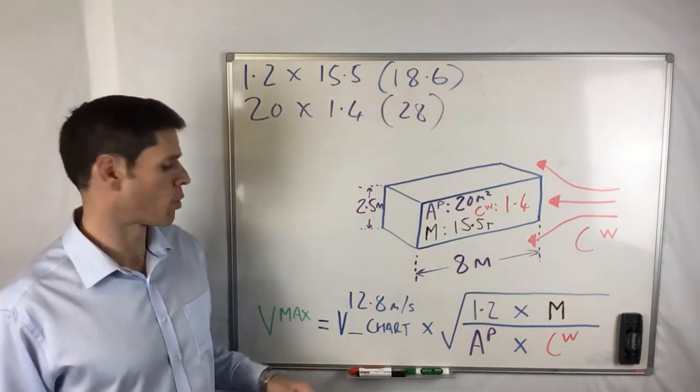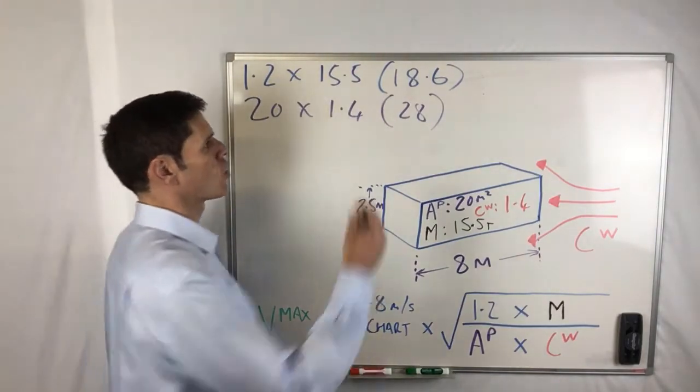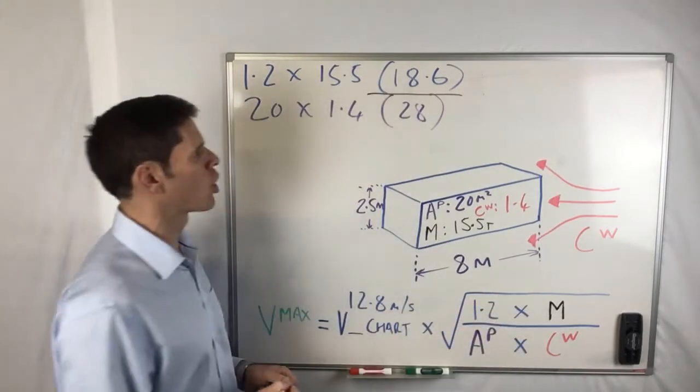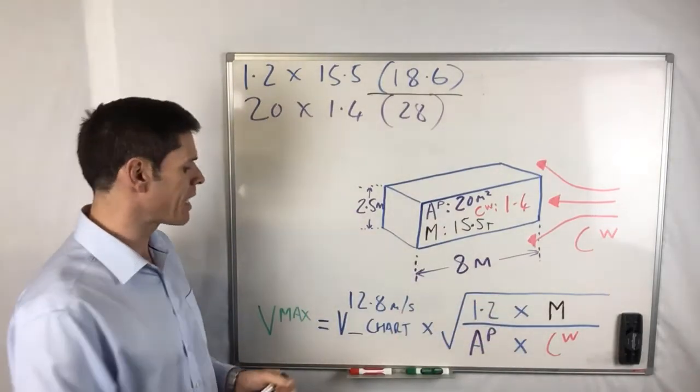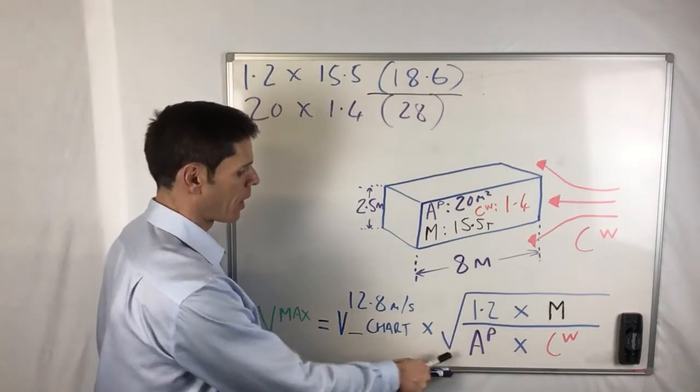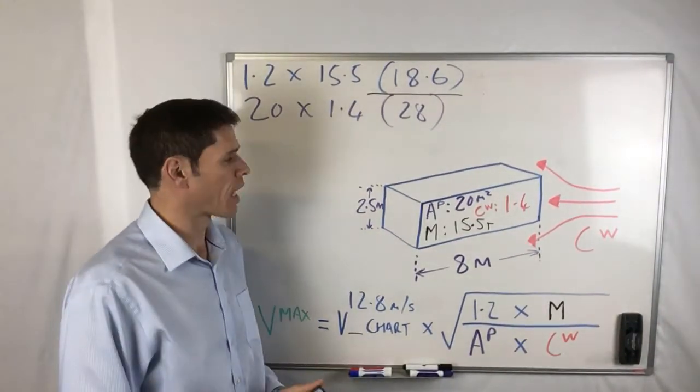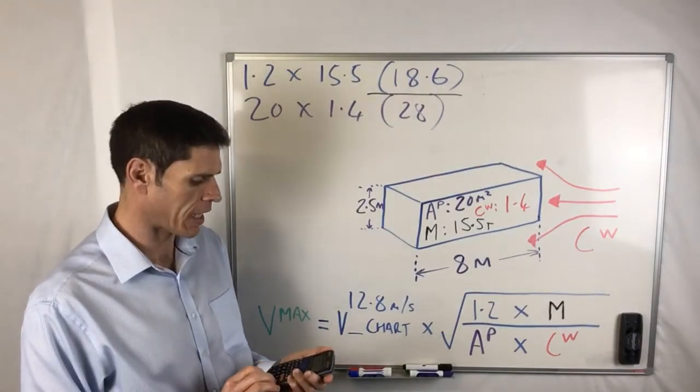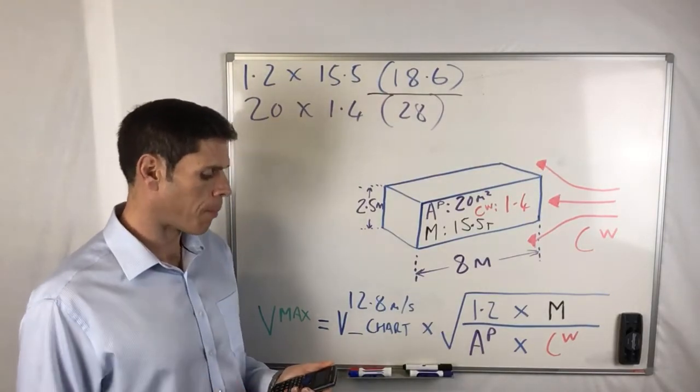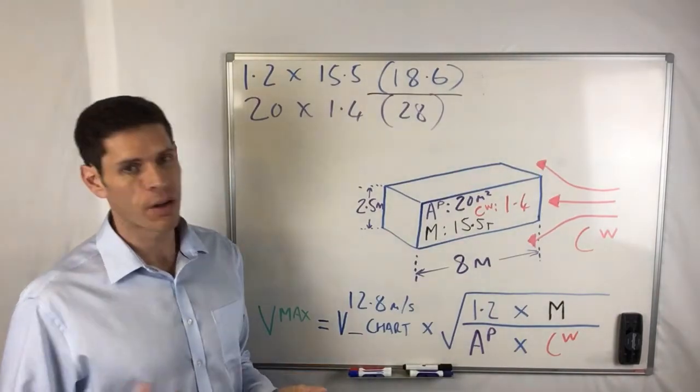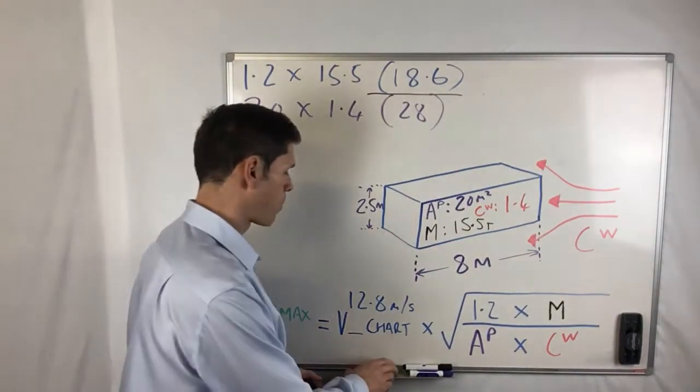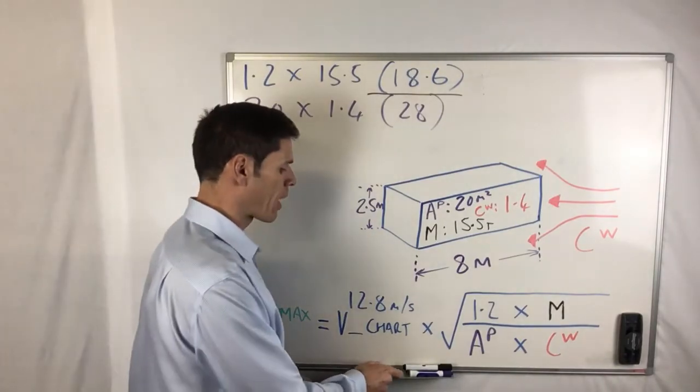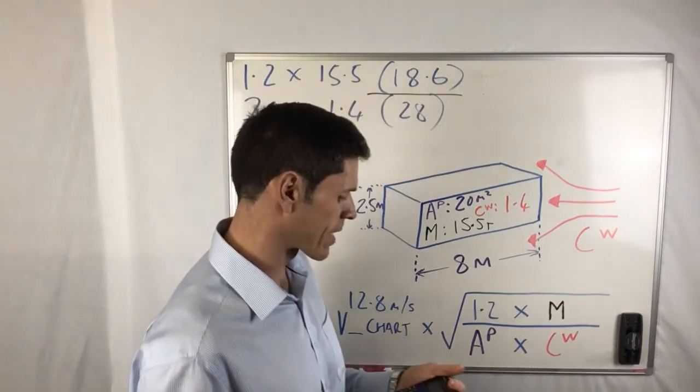That's actually called the wind loading area. So that would be a wind loading area of 28 square meters. What we need to do then, just as we've got here, we're dividing the top by the bottom. So we're dividing 18.6 by 28. So you can do that on your calculator, 18.6 divide by 28 gives us 0.6643, depends on how many decimal places you want to go to of course.